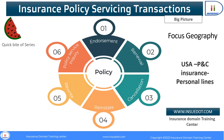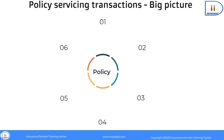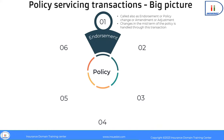Let us look at each transaction one by one. Endorsement or policy change is a common transaction. It is also called by different names like amendment, adjustment, or mid-term adjustment if it occurs in the middle of the policy. Once a policy is issued as part of new business, some change in the risk or personal circumstances of the insured may lead to a change in the policy.